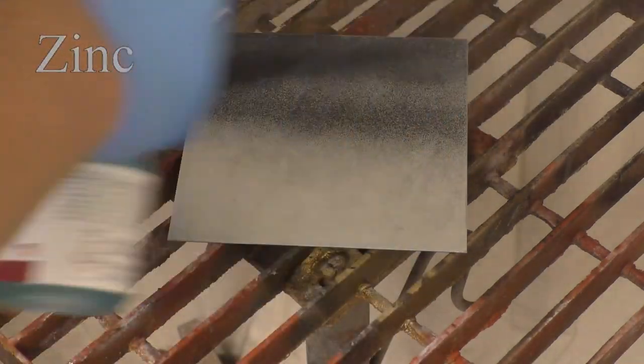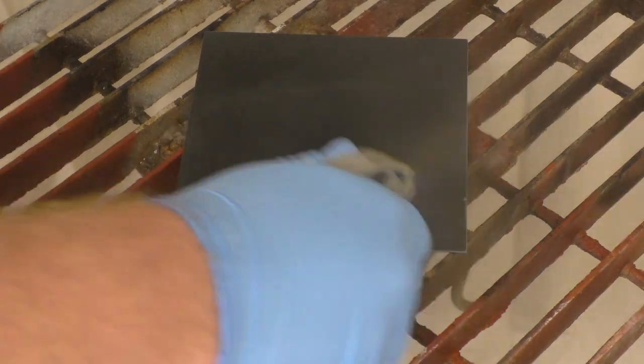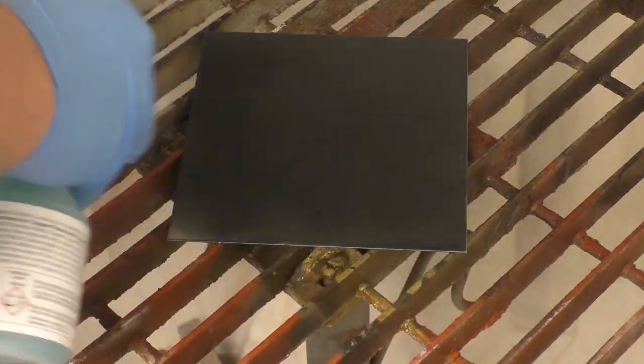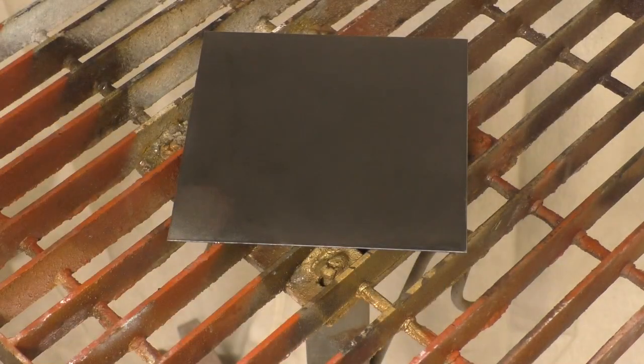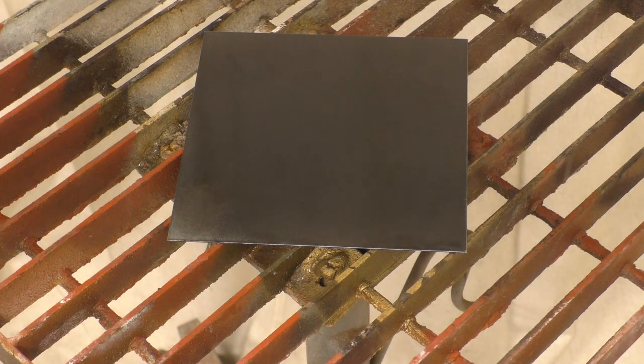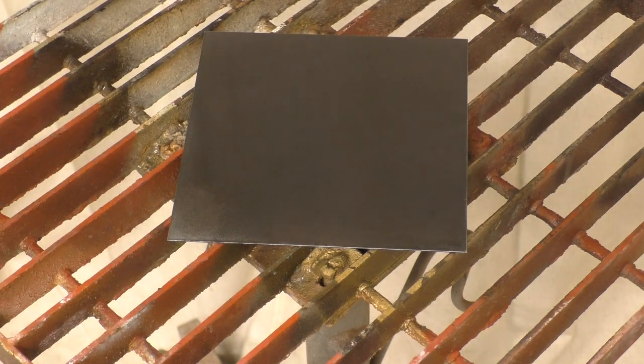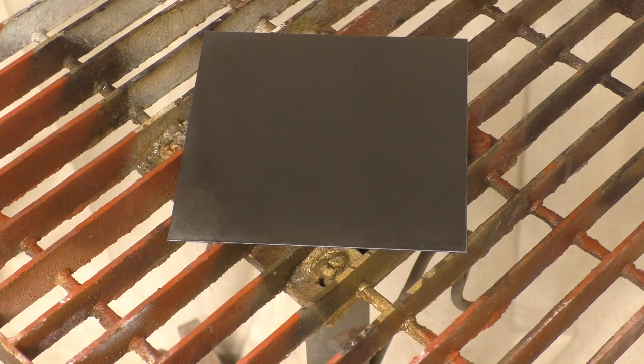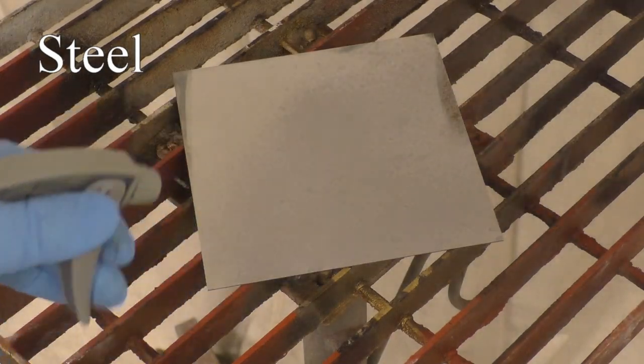Here we're going to do zinc, and zinc is a cold process with the copper sulfate. All it does is kind of a really nice gray. It looks black here, but it doesn't go black when you rinse it off. It's just a really nice gray.